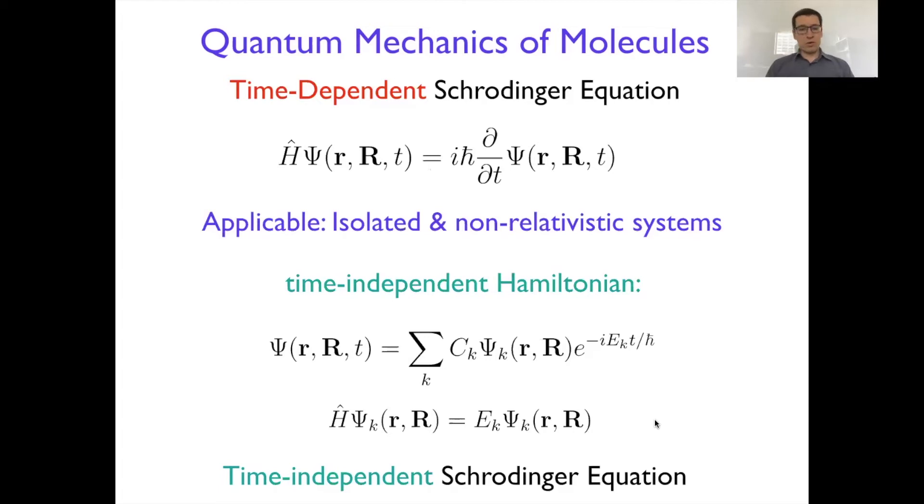For molecules you can do it as well. The only thing that will be left is to find these coefficients that are coming from usually initial conditions. So technically we can solve the time-dependent Schrodinger equation using the solutions of time-independent Schrodinger equation. That's why we can now focus on time-independent Schrodinger equation.